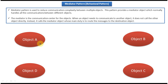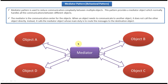In this kind of scenario, we can use Mediator Design Pattern. Instead of Object A sending a message directly to Object B or Object C, or Object C directly sending some message to Object A or Object D, what we can do is introduce a mediator object in between. Each object has to send a message to the Mediator, and the Mediator is responsible for routing the message to the destination object.